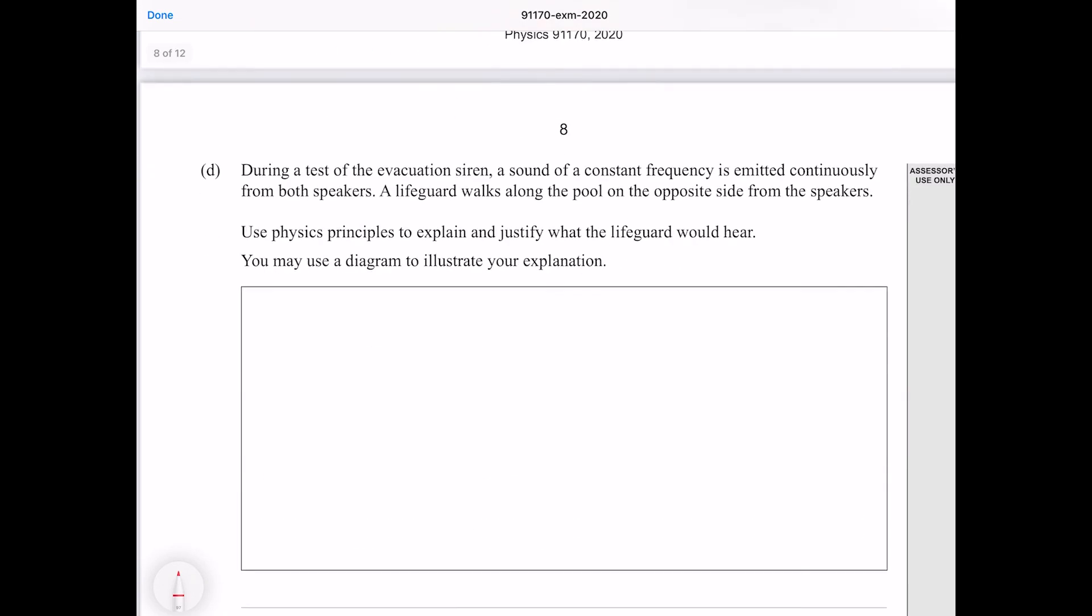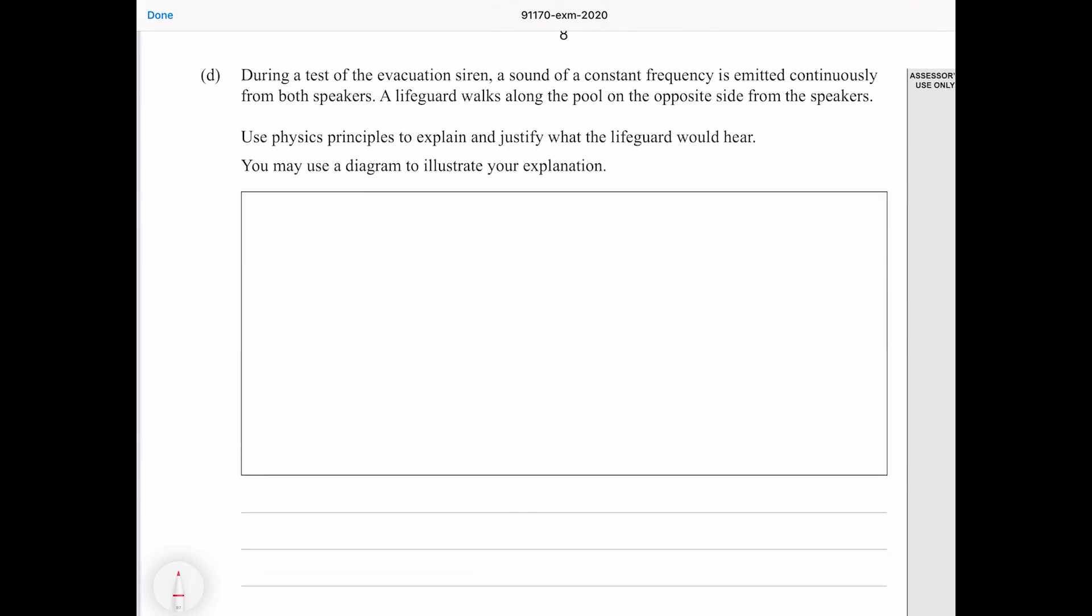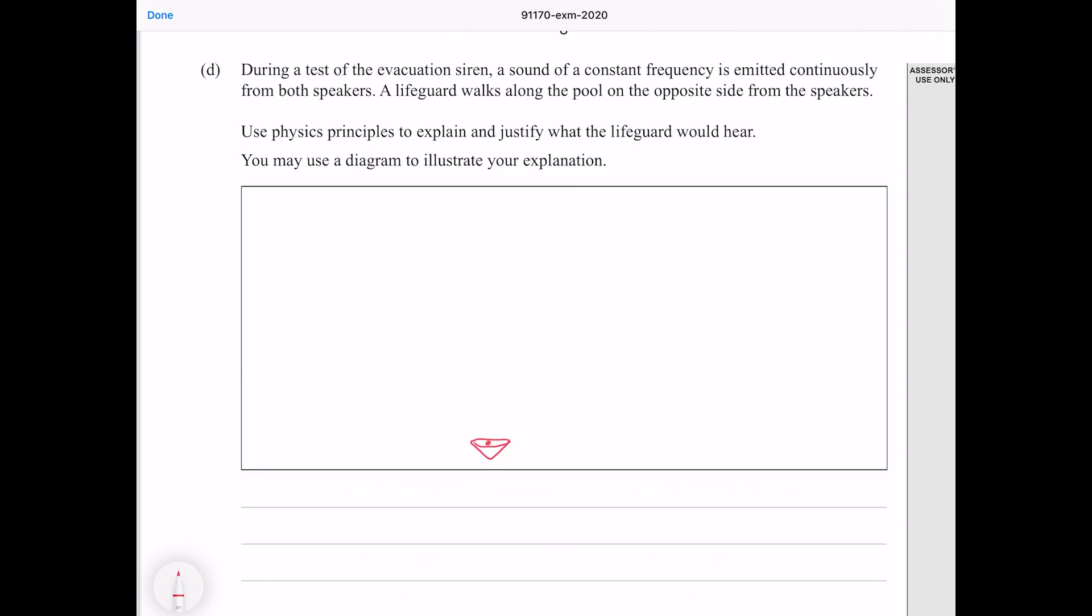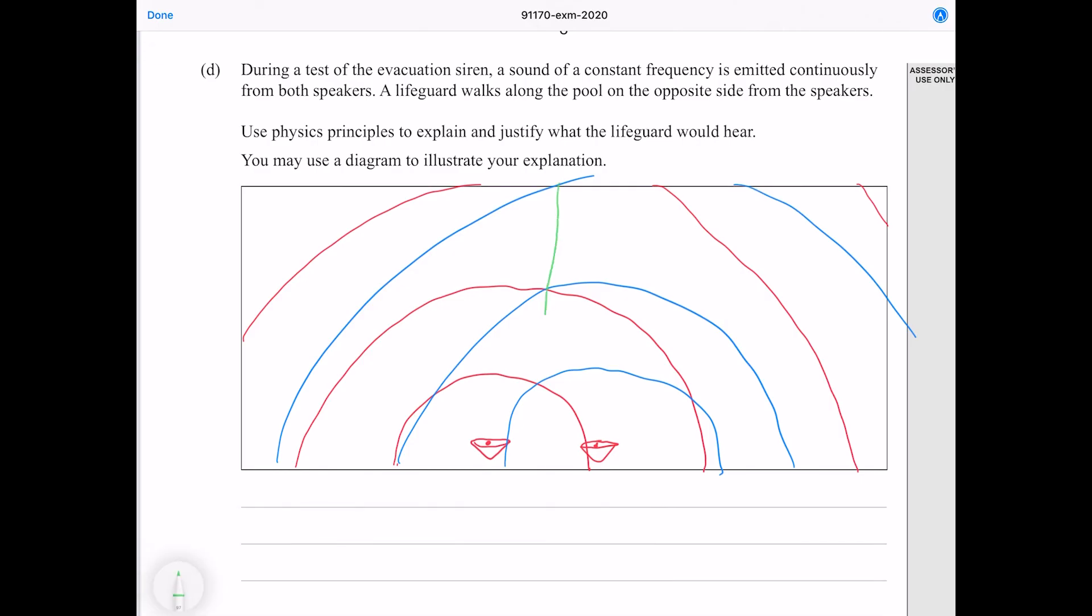During a test of the evacuation siren, a sound of a constant frequency is emitted continuously from both speakers. A lifeguard walks along the pool on the opposite side from the speakers. Use physics principles to explain and justify what the lifeguard would hear. You may use a diagram to illustrate your explanation. So this question here is your chance to flex your knowledge of two point interference. So let's do our diagram first. We have our two speakers here and I'm going to do this the best I can. And so our key idea here is that we're going to have lines of constructive interference and lines of destructive interference.